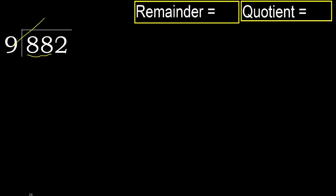9 multiplied by which number is nearest to 88, but not greater? 9 multiplied by 9 is 81. 81 is not greater, so we subtract. 88 minus 81 is 7.